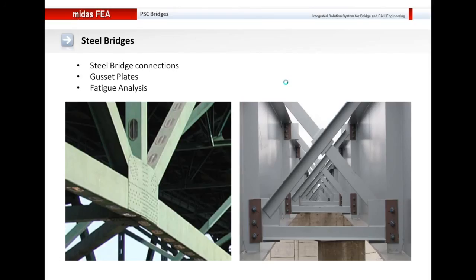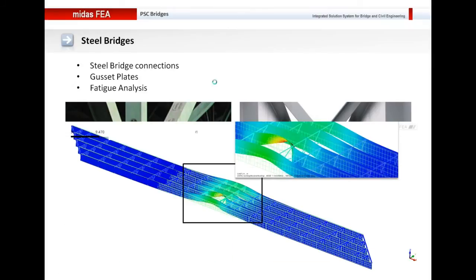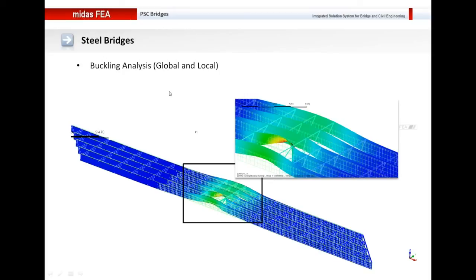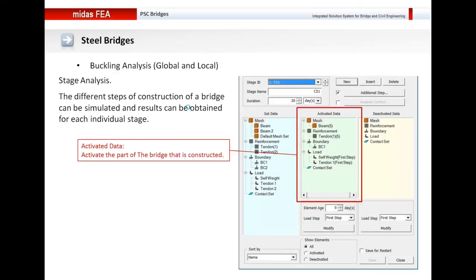Midas FEA can also be used to perform analysis on connections of steel bridges — specifically, analysis on gusset plates. You can perform stress analysis as well as fatigue analysis on these connections. You can also use Midas FEA to perform buckling analysis — you can obtain global or local buckling, and in this particular example I've shown how the buckling shape is obtained for this bridge type.